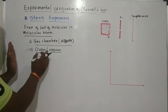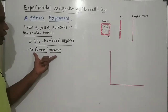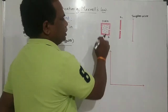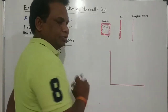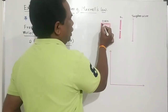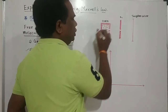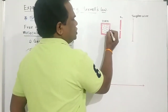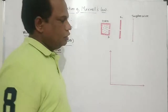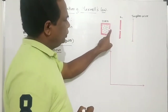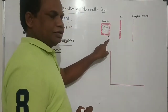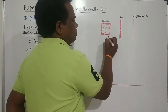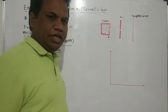The experimental setup consists of an oven O1 with a very small opening, which is supposed to be a slit S. This slit S is part of the oven O1.